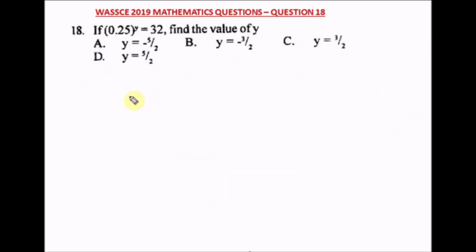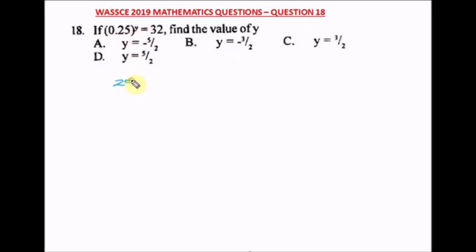Question eighteen of the WAEC 2019 mathematics past question. If 0.25^y = 32, find the value of y. Note that 0.25 = 25/100 raised to power y. This is an indices problem requiring simplification.